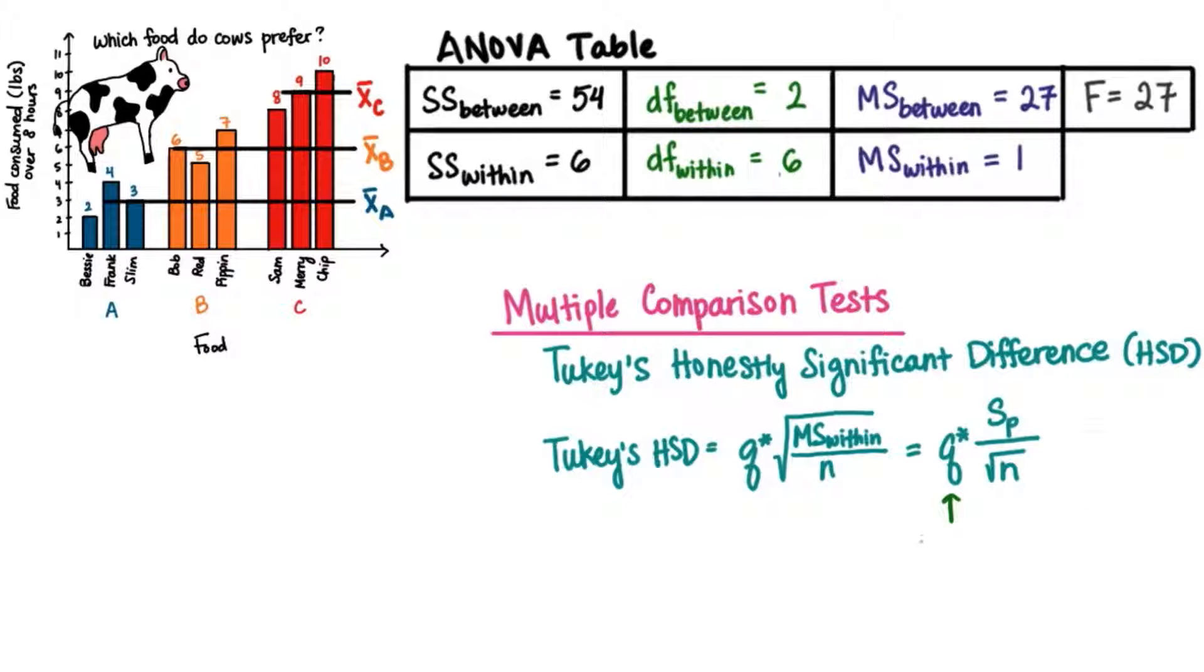Q is the studentized range statistic, and we find this in yet another table. Its purpose is to adjust the whole HSD so that it's less likely we commit a type 1 error.